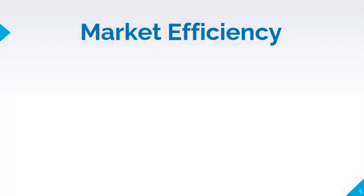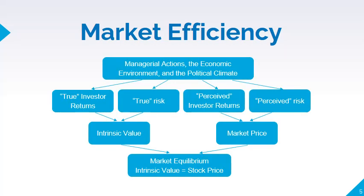The difference between intrinsic value and market value is depicted in this diagram. Intrinsic value is based on true expected returns and true risks — by true, we mean the returns and risks that most investors would expect if they had all the information that exists about the company. On the other hand, market value is based on perceived returns and risks — what investors would expect given the limited information that they actually have. When an asset's intrinsic value and market value are equal, the asset is said to be in equilibrium.